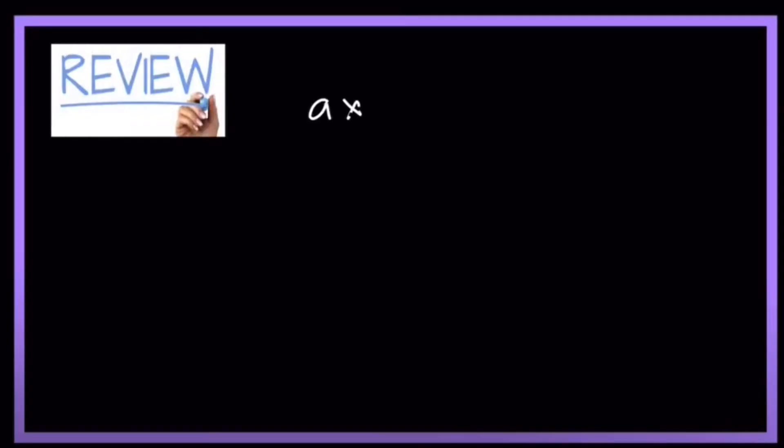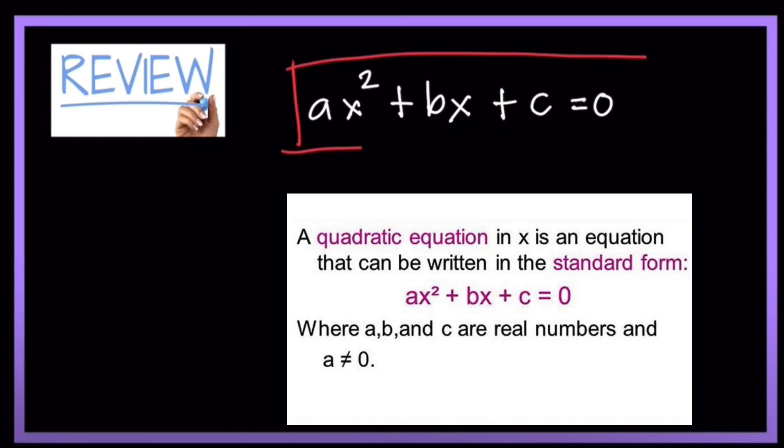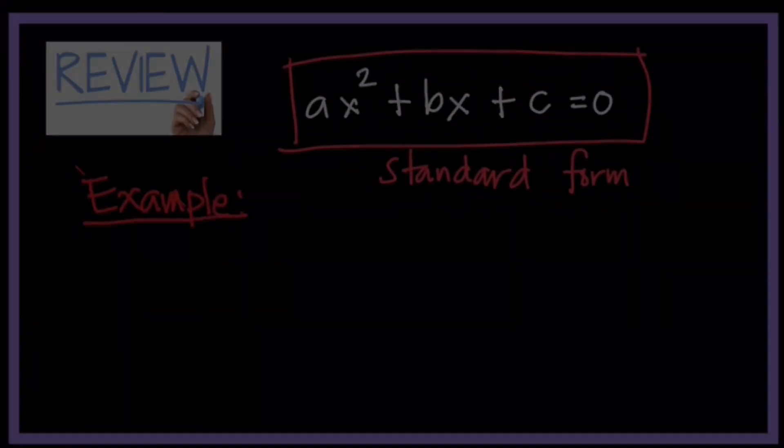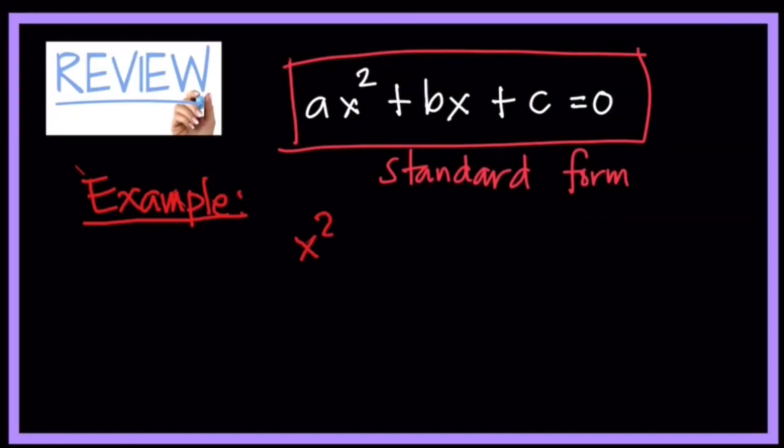Let's have a review first that the quadratic equation is in standard form: ax squared plus bx plus c is equal to zero. So let's have here an example. I have here x squared minus 3x is equal to x minus 7.